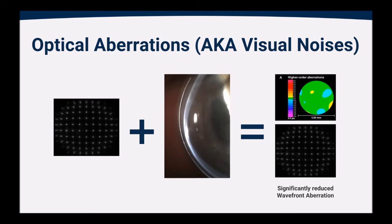So when we go back to our wavefront aberrometry, when we take an individual who is keratoconic but now is wearing a specialty contact lens, we can see that their wavefront is significantly reduced. So they see significantly less visual noise or visual static in the system because of the regular surface that's created by that specialty contact lens.